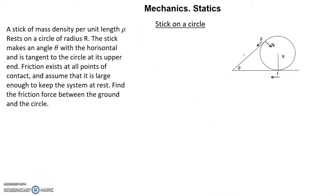Looking at the torques on the stick around the point of contact with the ground, we have Mg(L/2)cos(θ) = NL where M = ρL is the mass of the stick and L is the length.